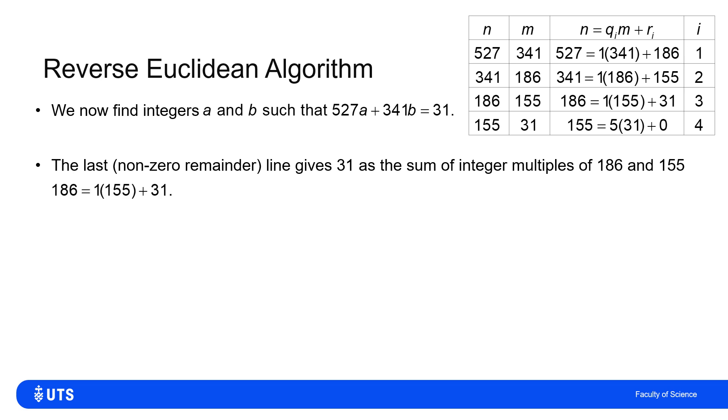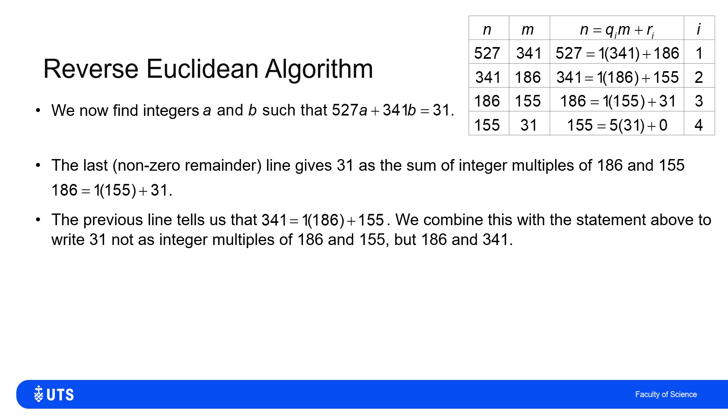The line above gave me 155 in terms of 341 and 186, so I can now get 341 in terms of 186 and 31. Ultimately what I want is 31 in terms of 527 and 341. If I use the top line which has 527 in terms of 341 and 186, then I can complete my steps back up.